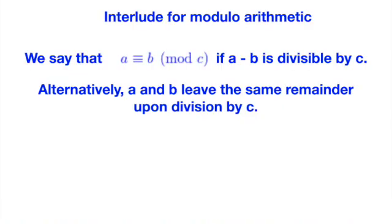Before we attempt to prove this, let's take a detour to refresh some concepts about modulo arithmetic. If you do not know already, modulo arithmetic provides a handy shorthand for us to express the remainders of numbers easily. Definition-wise, we say that a is congruent to b modulo c if a minus b can be divided by c. Alternatively, you can understand it as a and b leaving the same remainder upon division by c.